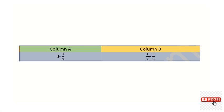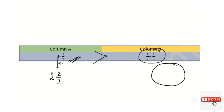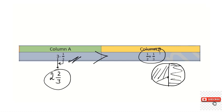Regarding question number 15: comparing 3 minus one-third versus one-half plus one-third. When subtracting a fraction from a whole number, 3 minus one-third equals 2 and 2/3. For the right side, one-half plus one-third: multiply the denominators and add, giving 5/6. Since 2 and 2/3 is greater than 5/6, the left side is greatest.